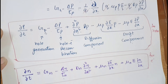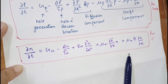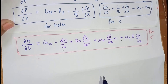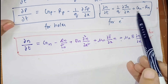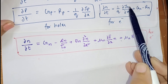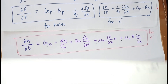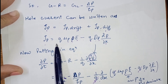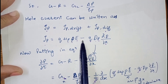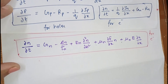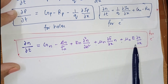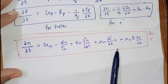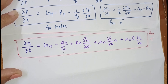We can also write the complete continuity equation for electrons. This equation has positive signs because for electrons, the term (1/q) carries a positive sign, and the drift and diffusion current terms are also positive. Only the recombination term carries a negative sign. This is the complete continuity equation for electrons. I hope you understand the concept clearly.